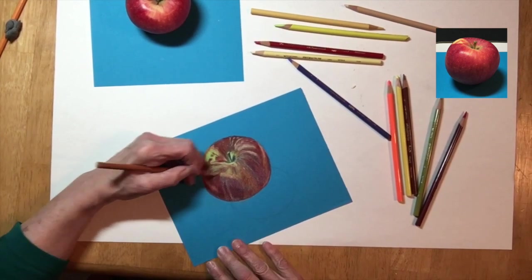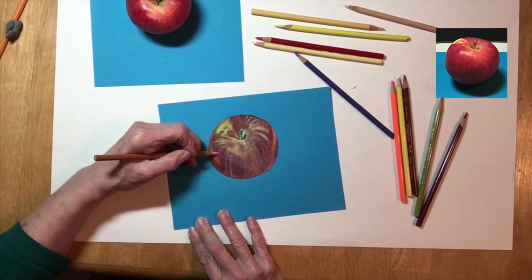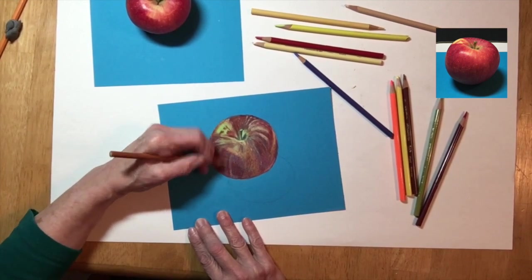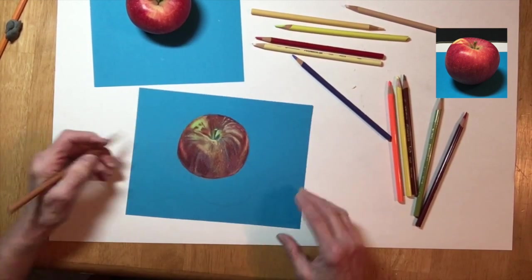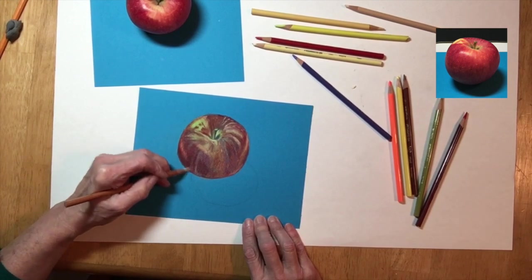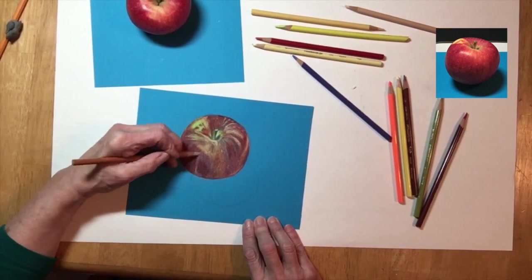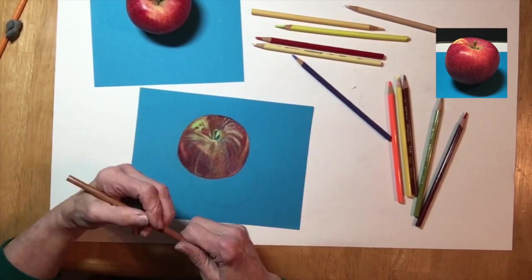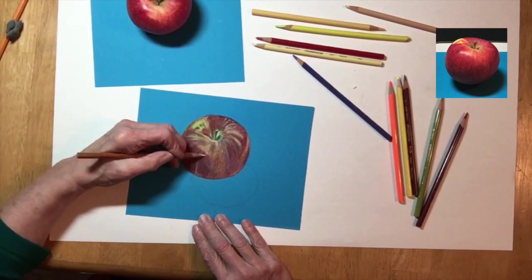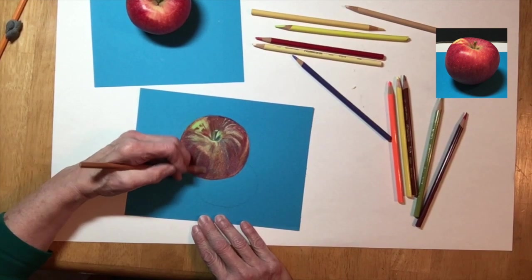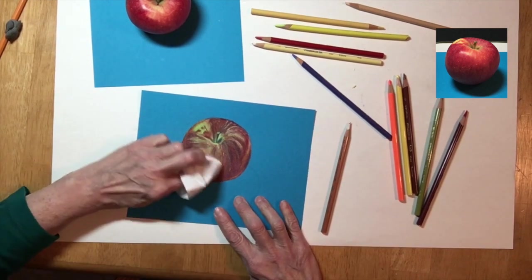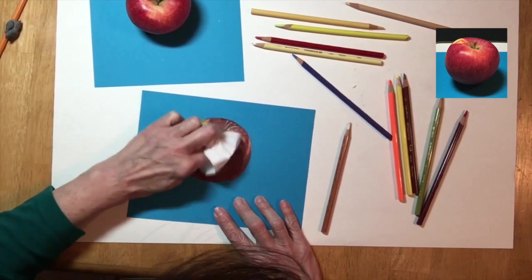You notice that I have not touched the shadow at all. That's because the shadow is going to be handled in a different way. If you remember back from the last video, the shadows should be applied in a very thin manner because the shadow is not an object—the shadow is just the absence of light which the apple is casting shadow onto that blue paper. So the shadow will be the same color as the paper but darker and duller.